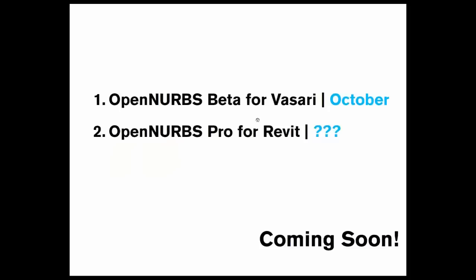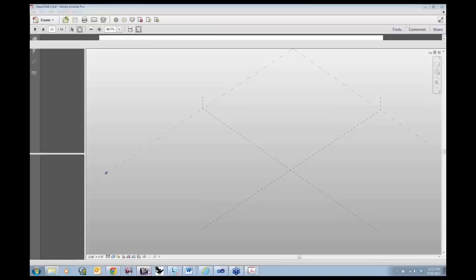The current development schedule is that we're hoping to release a beta for Vasari in October for the open NURBS importer, so you'll be welcome to try it out for a period. We're continuing development of a pro version for Revit — there's no set deadline on that yet, but we're getting close.